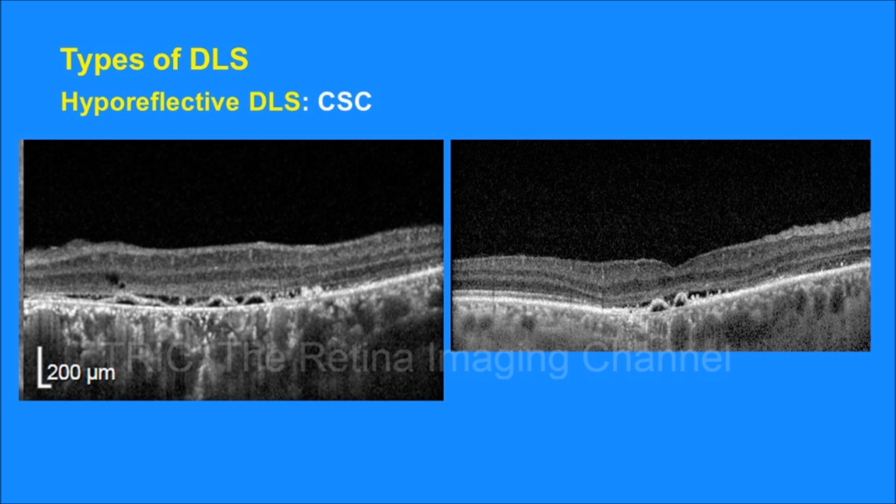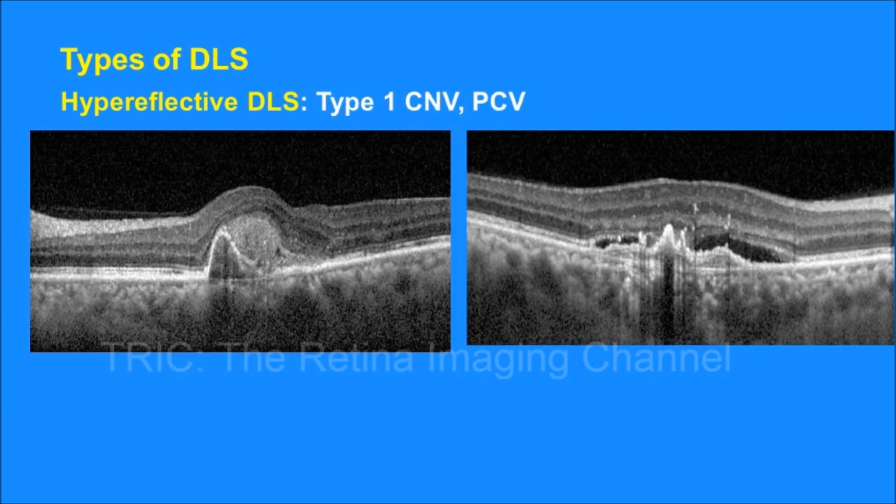Now are there any types of DLS? Yes. DLS can be hyporeflective or hyperreflective. The DLS seen in these two images is called hyporeflective because the space between elevated RPE and its basement membrane is clear or hyporeflective. Hyporeflective DLS is seen in central serous chorioretinopathy. In contrast, in these images we see that there is hyperreflectivity between elevated RPE and its basement membrane, hence this is called hyperreflective DLS. Hyperreflective DLS is a feature of type 1 CNVM or IPCV.